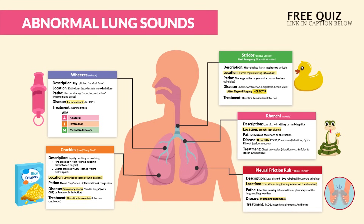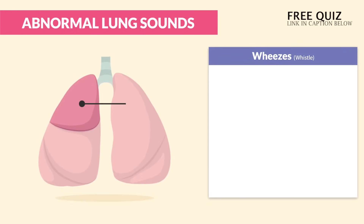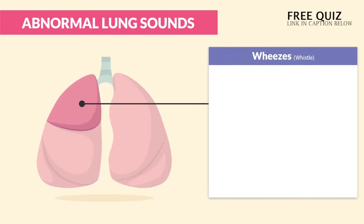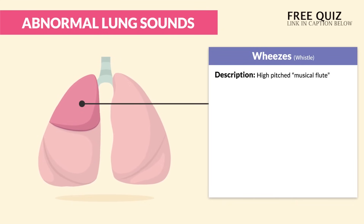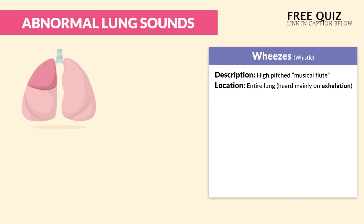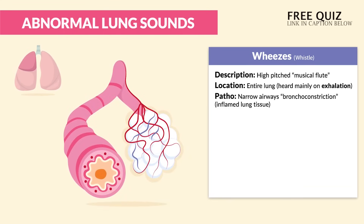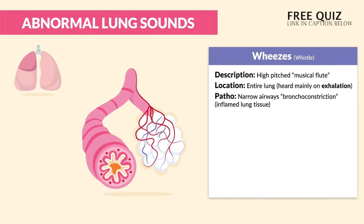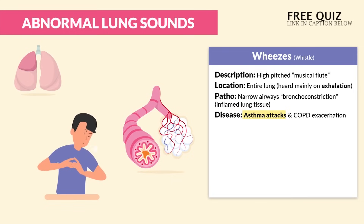First up is wheezes, which we call the whistle sound. It's described as a high-pitched musical flute sound located throughout the entire lung, but the key term here is it's heard mainly on exhalation — basically breathing out. The pathophysiology is very simple: narrowed airways from bronchoconstriction, basically those inflamed lung tissues. The disease process is typical for asthma attacks as well as COPD exacerbation.